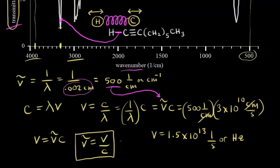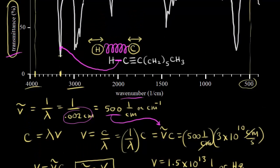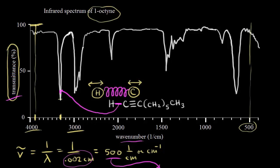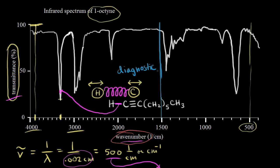For right now, the frequency of light is directly proportional to the wave number. Looking at an infrared spectrum, let's draw a line at approximately 1,500 wave numbers, dividing the spectrum into two regions. The left side is called the diagnostic region, because a signal in this region can be diagnostic for a certain functional group.